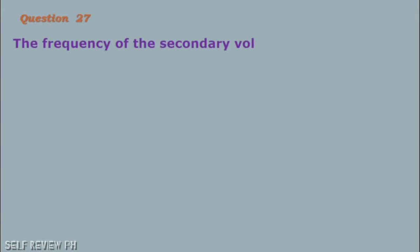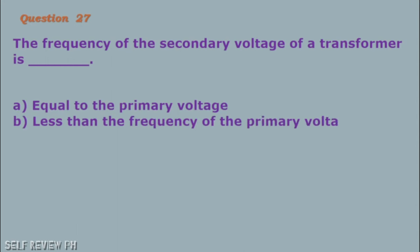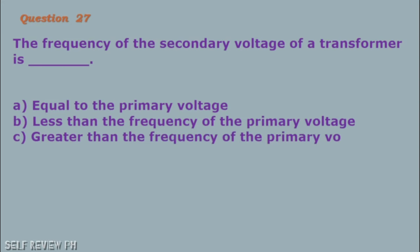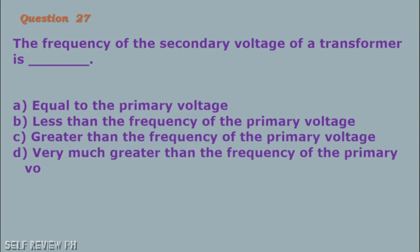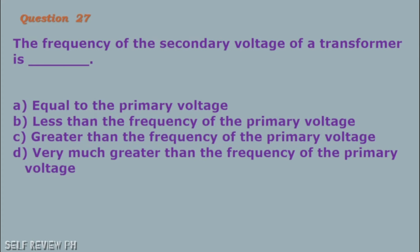Question number 27: The frequency of the secondary voltage of a transformer is blank. A. Equal to the primary voltage B. Less than the frequency of the primary voltage C. Greater than the frequency of the primary voltage D. Very much greater than the frequency of the primary voltage. The correct answer is letter A, equal to the primary voltage.